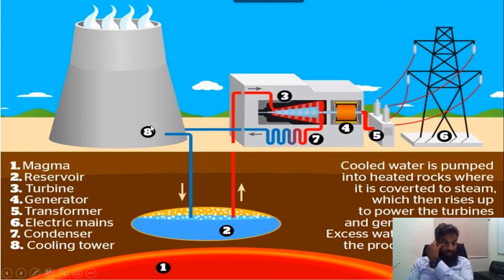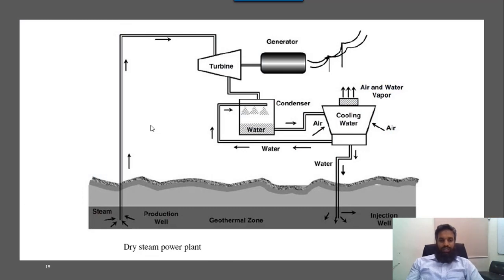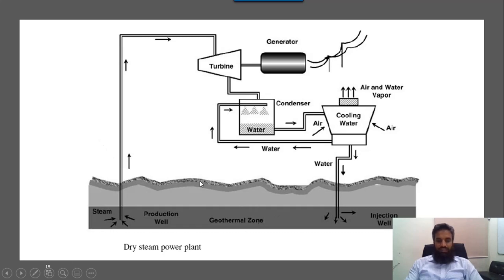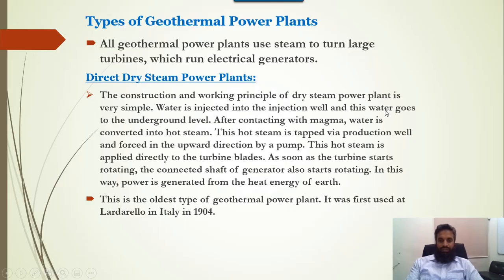This is the complete structure of the geothermal plant. In the block diagram, we can see the injection well, the production well, and the geothermal zone. From the production well it goes to the turbine and then the generator. There is also a condenser area and a cooling tower.